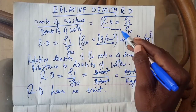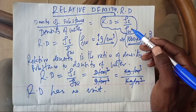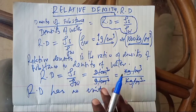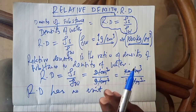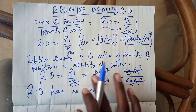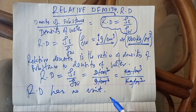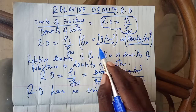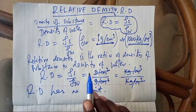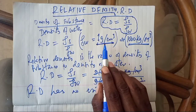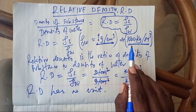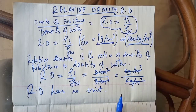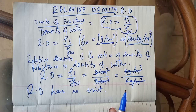Relative density is equal to density of substance over density of water. Haina kiziyo. Haina kiziyo kwa sababu ni ratio ya densities mbili ambazo zina unit moja, ambazo zinakuwa cancel out. That is how we can determine the relative density of a substance. What is important here is to understand that the density of water is constant, and it may be given in terms of 1 gram per centimeter cubic or 1,000 kilogram per meter cubic.